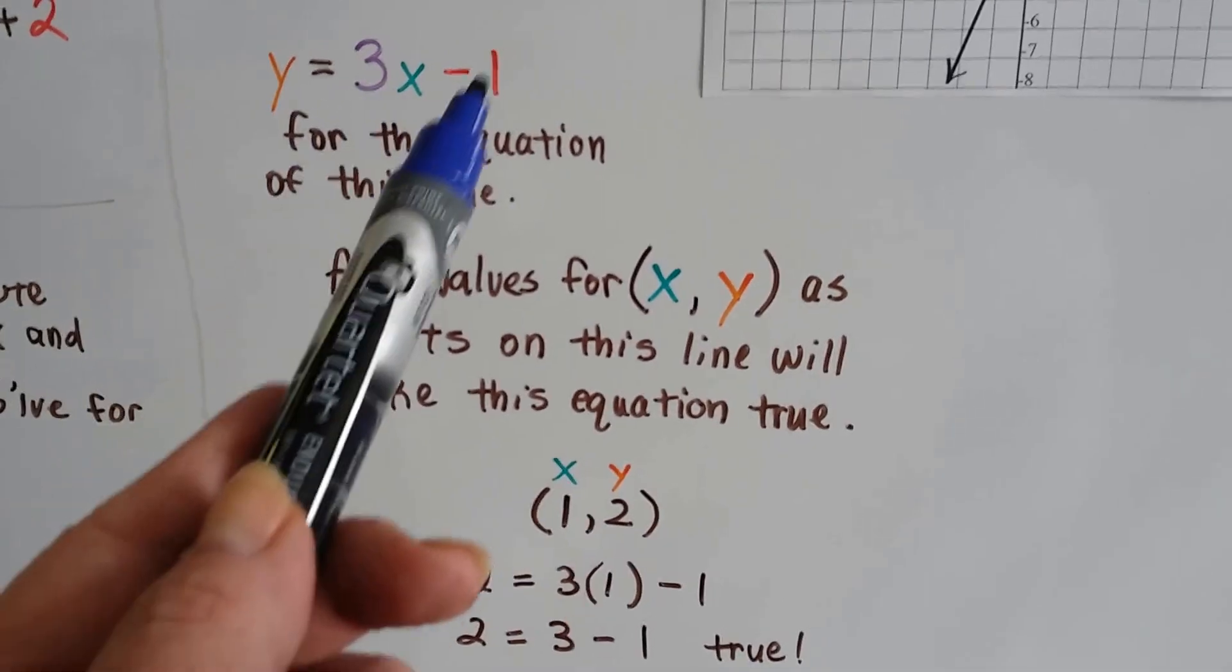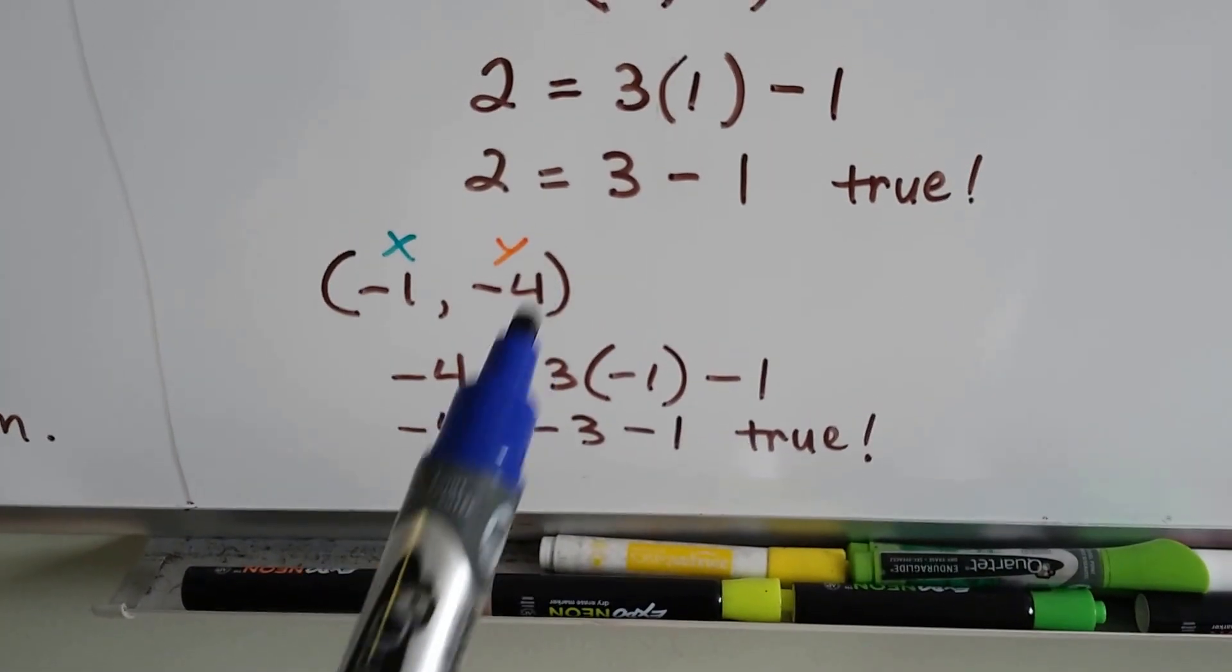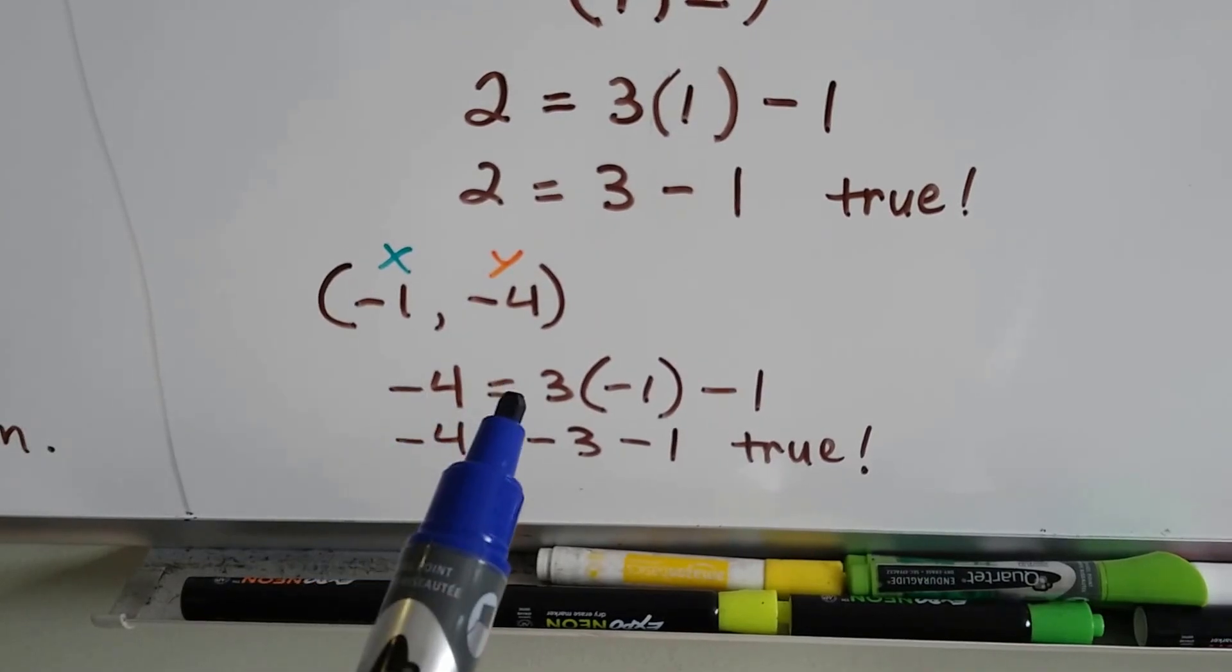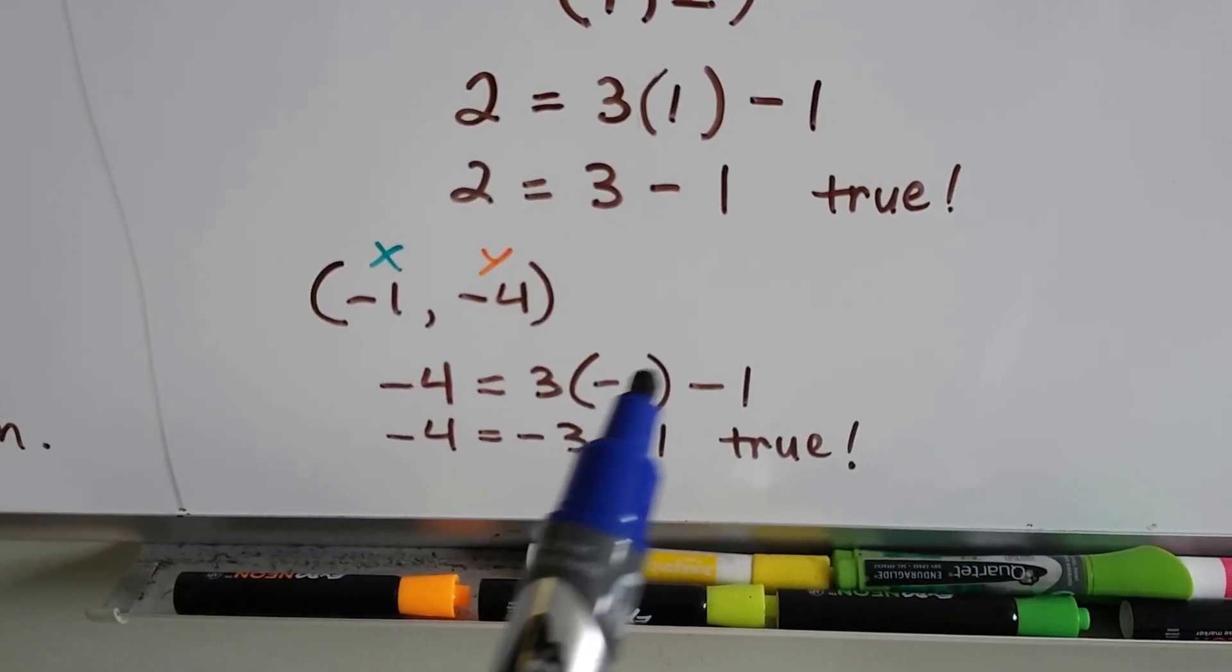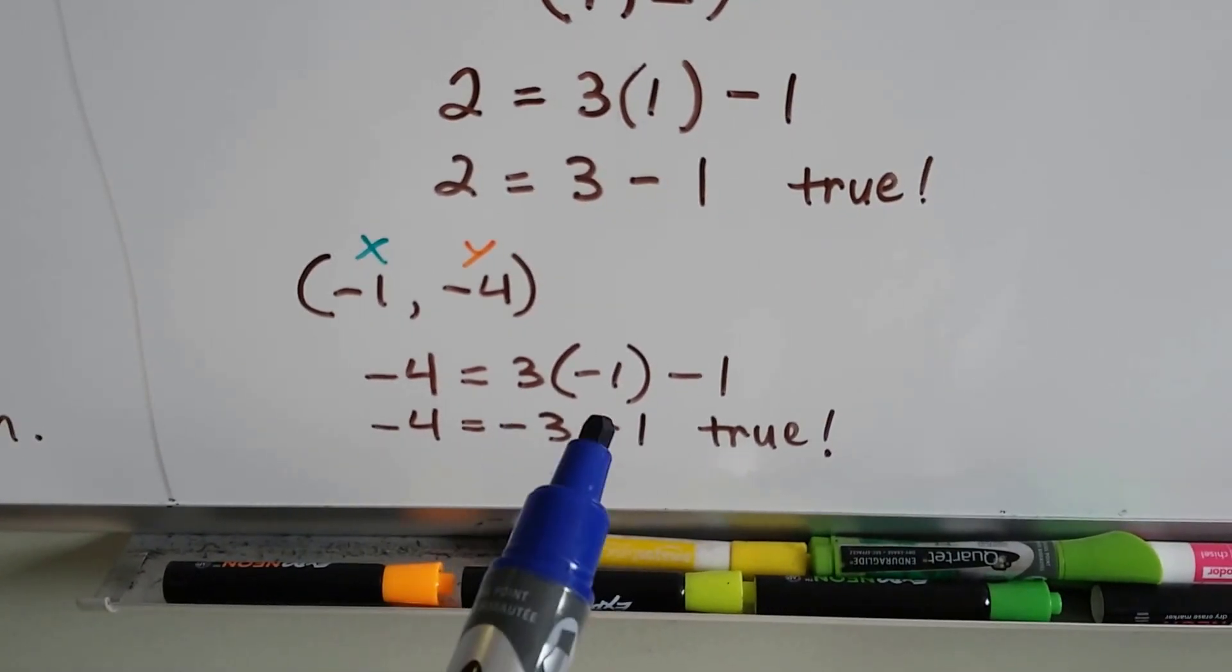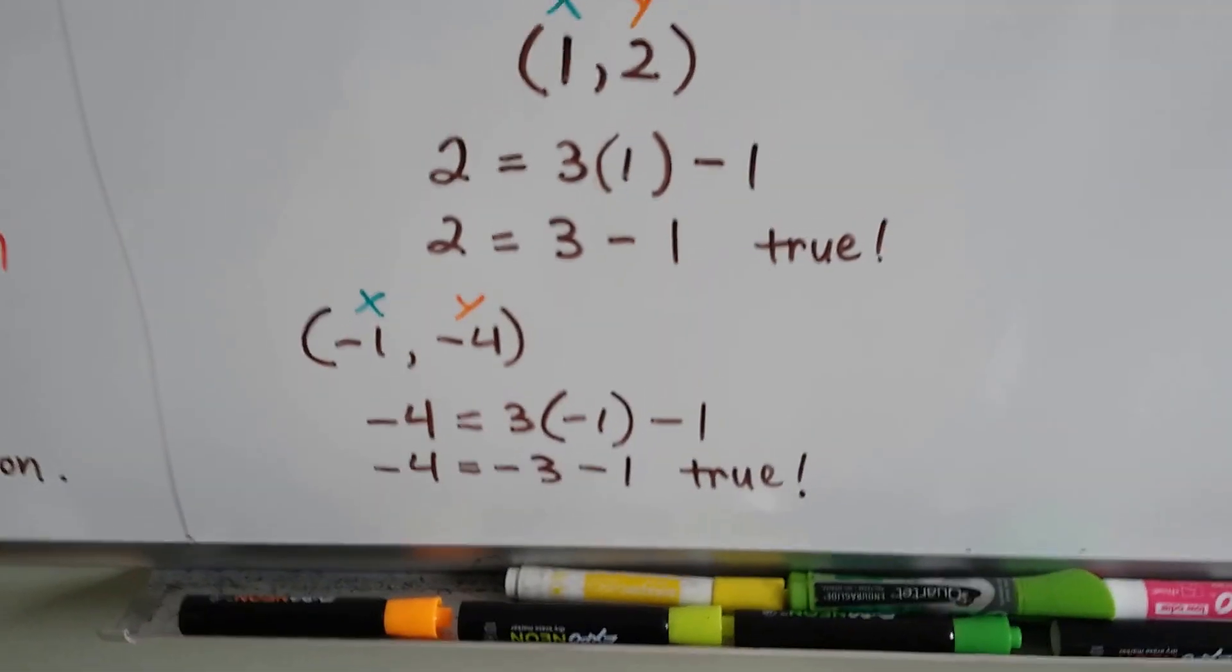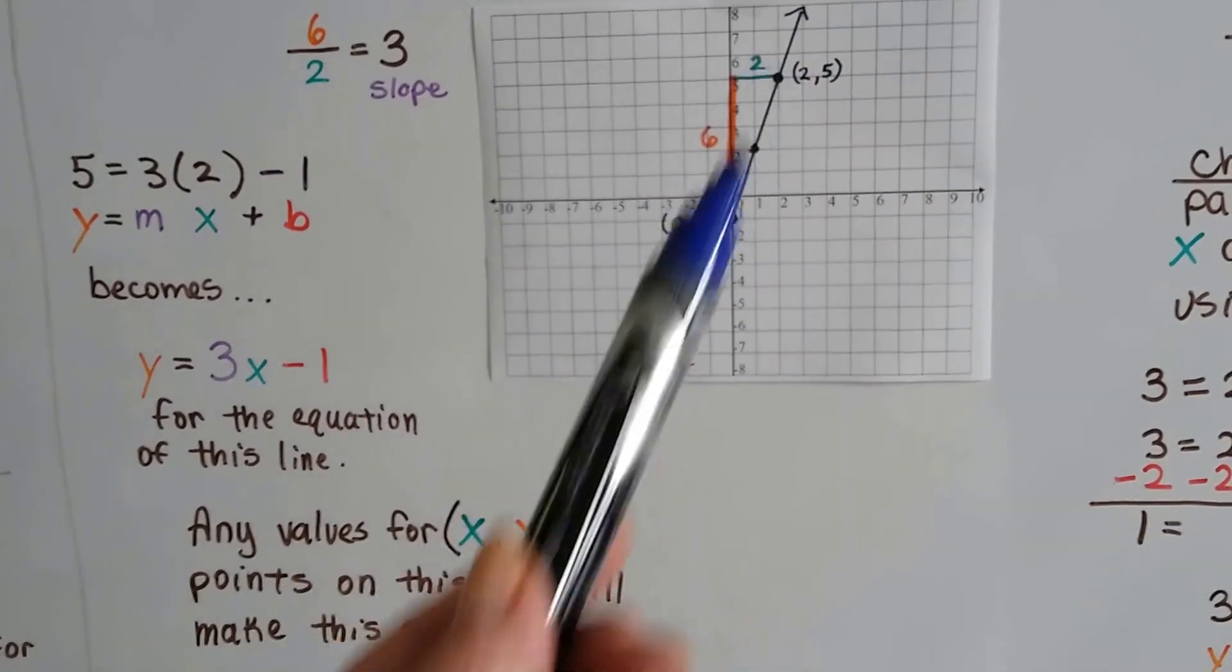So, remember, we've got a 3 for a slope and a minus 1 for a y-intercept. So the y-value is negative 4, and it equals that 3 slope. Our x-value is a negative 1 minus 1. Negative 4 equals a negative 3 minus 1. Yep, that's true.